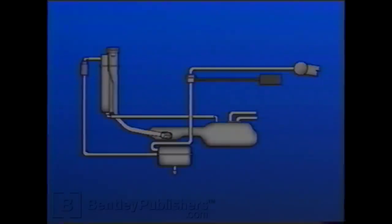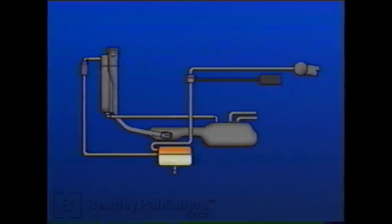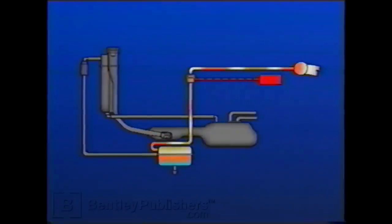That's all there is to the EVAP system. It is a sealed system that traps the fuel vapor created in the fuel tank. This vapor is routed through the breather bottle, rollover valve, and through the EVAP canister. The EVAP canister then sends the fuel vapor through the vent lines to the EVAP canister purge regulator valve. The ECM controls this valve and allows the fuel vapor to be burned in the engine.